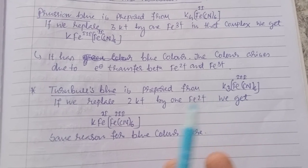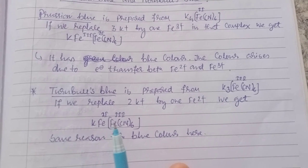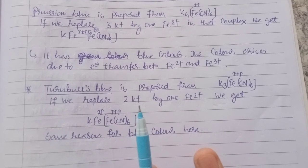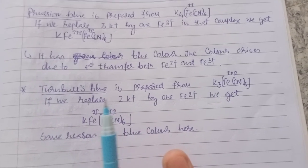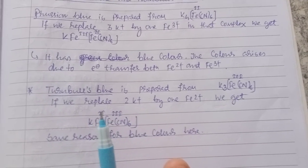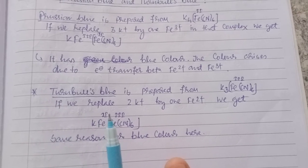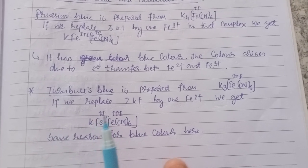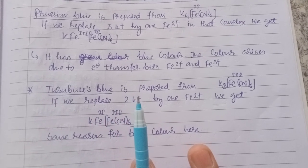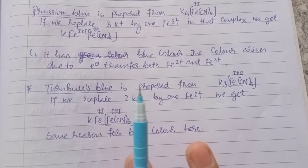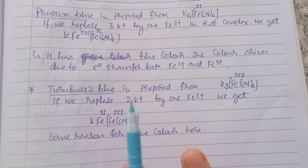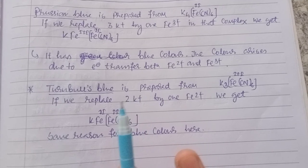we get KFe[Fe(CN)6]. Outside the coordination sphere, Fe is in the +2 oxidation state, and inside the coordination sphere, Fe is in the +3 oxidation state — the reverse case compared to Prussian Blue.